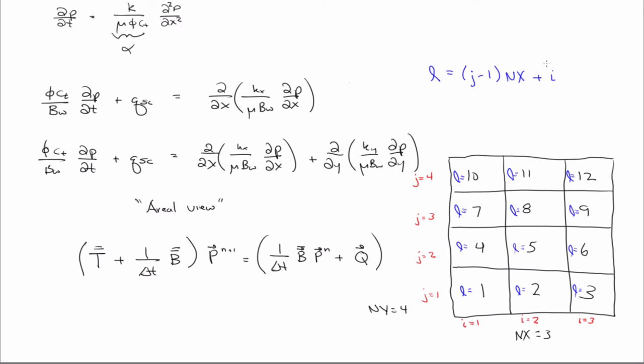So if j is 1, I have 1 minus 1, which is 0, times nx, so that whole thing is 0, and then I just have i left over. So for j equals 1, then I just have 1, 2, 3. For j equals 2 then, so I have 2 minus 1 is 1 times nx. So nx is 3. So then I have 3 plus 1 is 4, 3 plus 2 is 5, 3 plus 3 is 6. And so on.